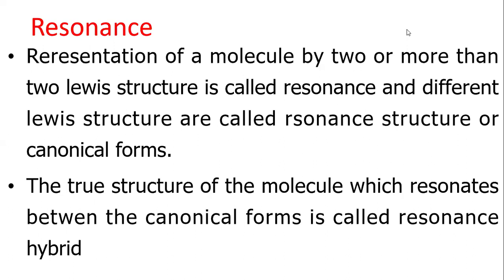Representation of molecules by two or more than two Lewis structures is called resonance, and different Lewis structures are called resonance structures or canonical forms. The true structure of the molecule, which resonates between the canonical forms, is called the resonance hybrid.